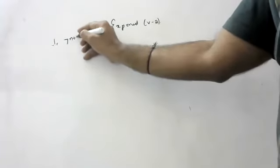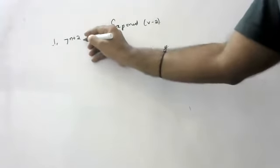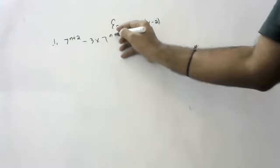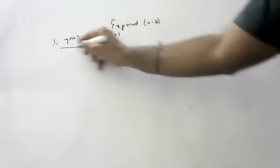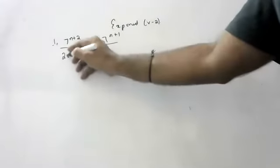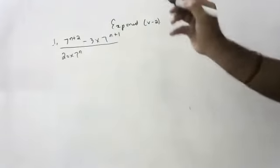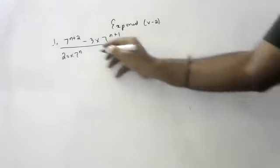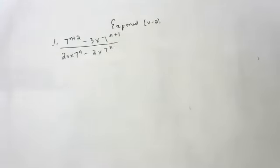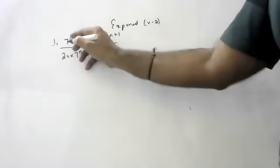The first question is: 7 to the power n plus 2, minus 3 into 7 to the power n plus 1, divided by 20 into 7 to the power n, minus 2 into 7 to the power n. Anyone wants to say? I will start children. I will explain children.